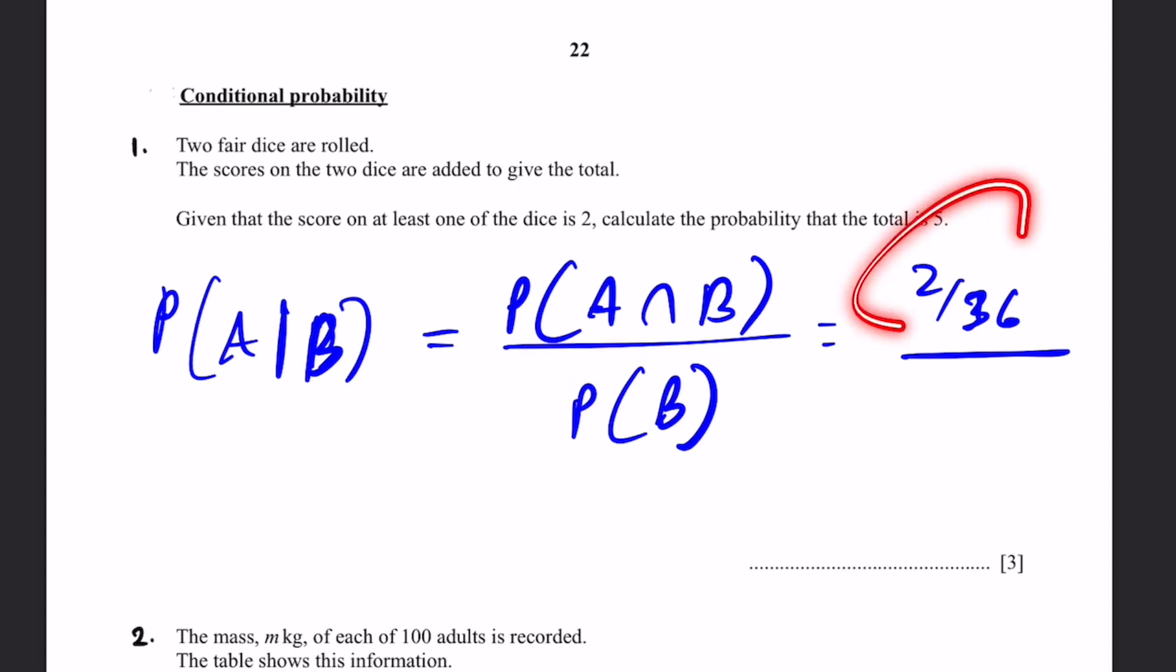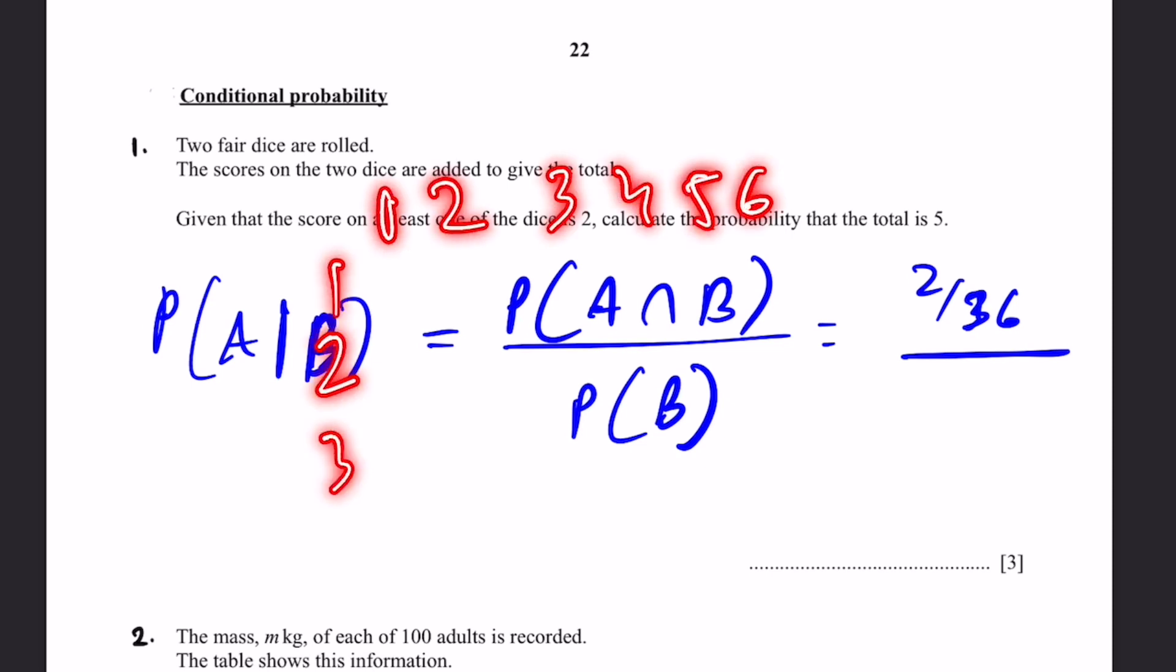So 2 by 36 divided by the denominator, which is going to be probability of B, which is probability of getting the score on at least one of the dice 2. So in that table which I was talking about, 1, 2, 3, 4, 5, 6. Out of these, which are the rows or columns where there's at least one of the dice having a score of 2. It's this row and this column, right?